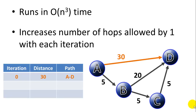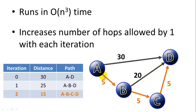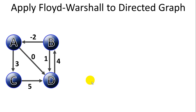Let me explain that. Let's say you have this simple graph, and we're looking for the distance between A and D. At iteration 0, we can see the distance is 30 — there's a direct path from A to D. In the first iteration, we're also allowed to visit vertex B, and we find a shorter path through B of only 25. In the third iteration, we can also visit vertex C, and we compare our current shortest path of 25 to the path through C, which is only 15. That's how Floyd-Warshall's algorithm works in a nutshell.